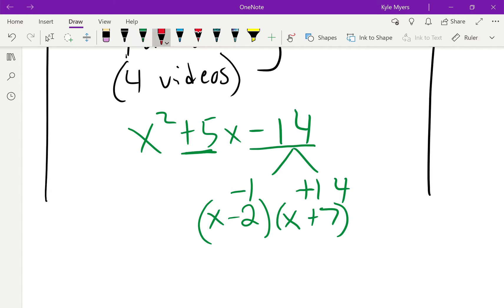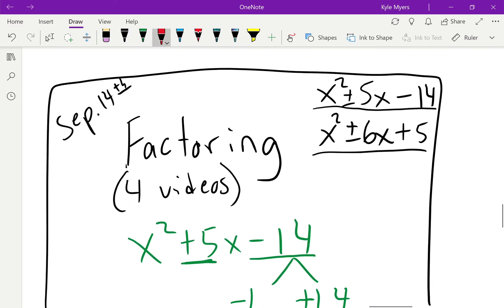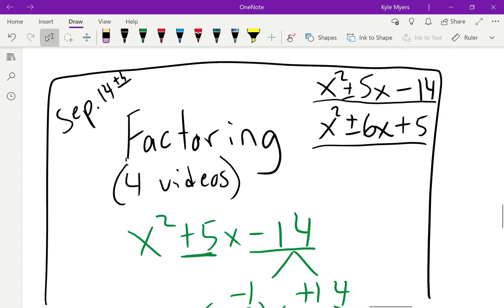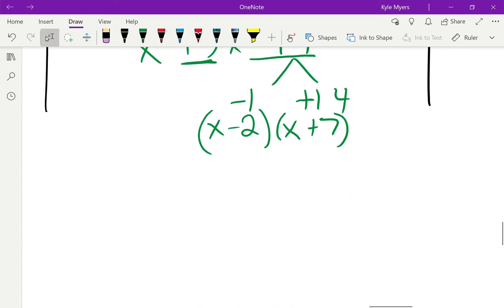Move on to the next one. The next one is just like it: x² - 5x - 14. It's going to end up being pretty much the same thing. Obviously 1 and 14 is still not going to work because I just need a negative 5 instead of a positive 5.